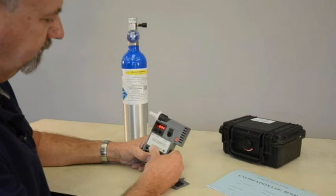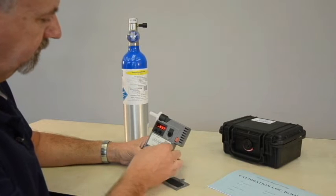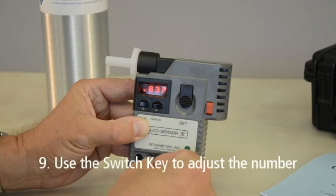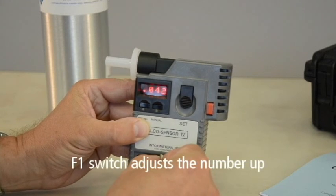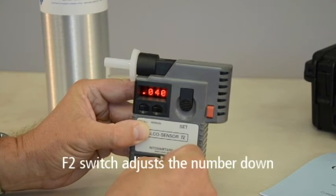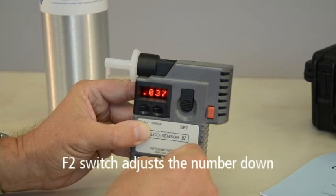If the expected value of the gas standard being used for the current calibration is different than the value of the last calibration displayed on the screen, use the switch keys to adjust the number. The F1 switch will adjust the number up. The F2 switch will adjust the number down.